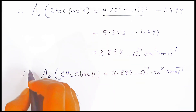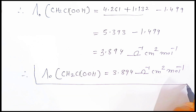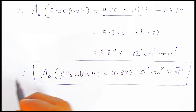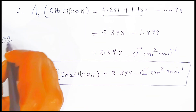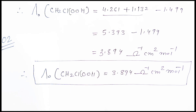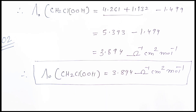Therefore, the molar conductivity at zero concentration of monochloroacetic acid equals 3.894 ohm⁻¹ cm² mol⁻¹. This is how you represent it in a board examination — this is a two-marks question. If you like this video please share it and subscribe. Thank you very much, have a nice day, God bless you.